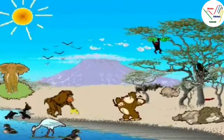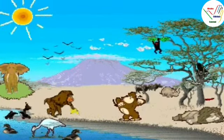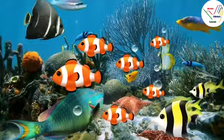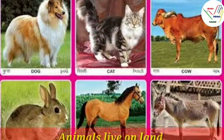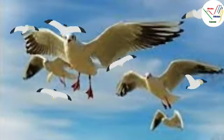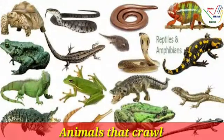Similarly, students, animals also like to live at different places. For example, some animals live in water like fish and crab. Some animals live on land like cat, dog, cow, etc. Some animals fly high in the sky like crow, pigeon, etc. And some animals crawl on the land like snake and lizard.